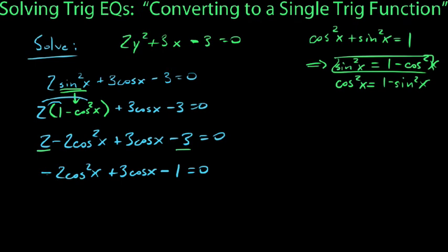If I'm going to factor this quadratic trinomial, I'd really like for my leading coefficient to be positive. So we'll multiply this whole thing through by -1. We get 2cos²x - 3cosx + 1 = 0.